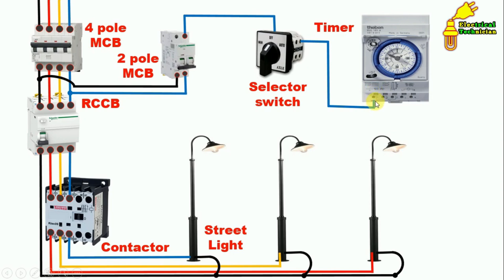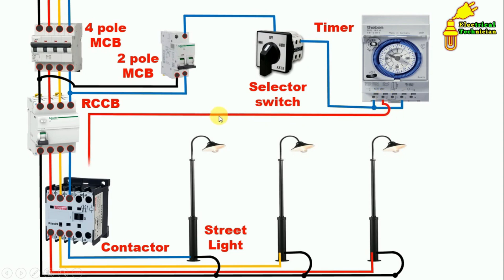I connected the wire with the NO contact — terminal number one — of the timer. To operate this timer, it needs power supply. Here L and N terminals are marked; connect phase supply to L and neutral supply to N. The wire connected through the selector switch is looped and connected to the L terminal of the timer. At the common terminal of the timer, connect one wire and connect it to the A1 terminal of the contactor.